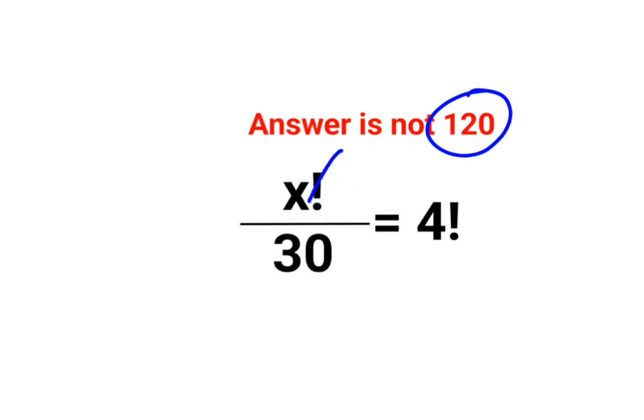A lot of people think that the factorials can get cancelled, so we're left with x equals 4 multiplied by 30. That should get you 120. That is not how a factorial works.